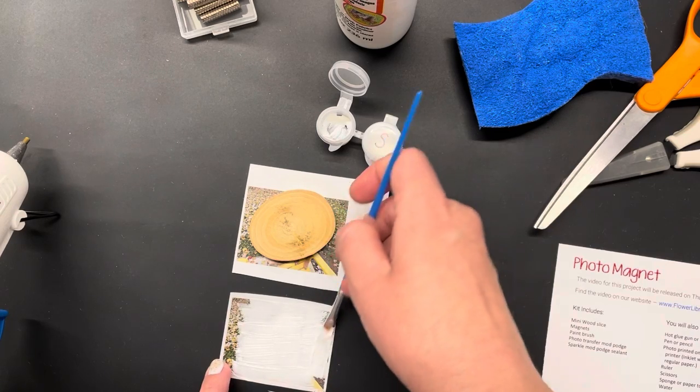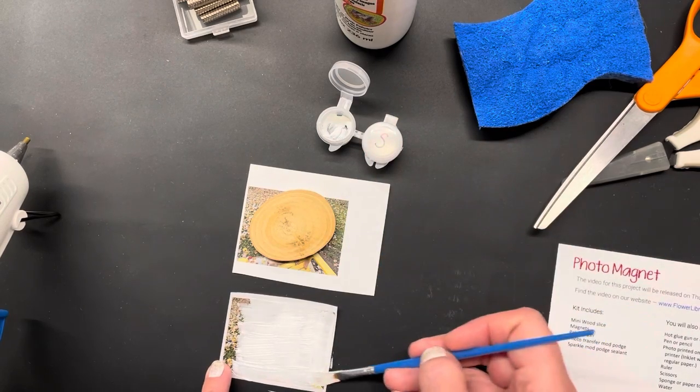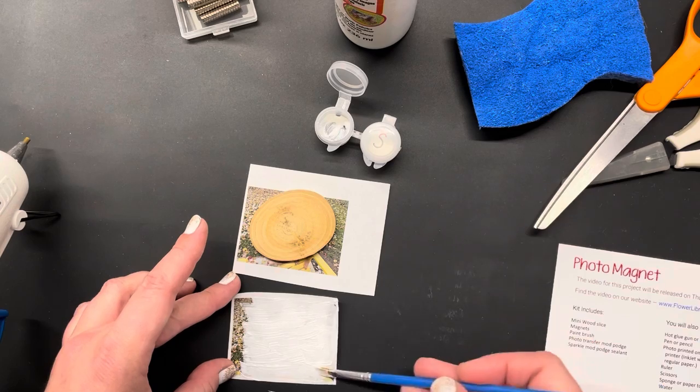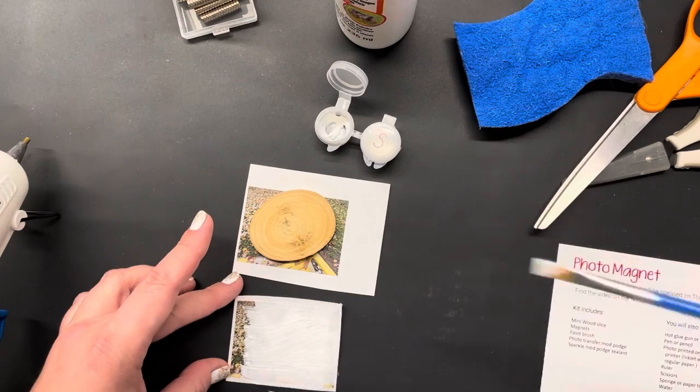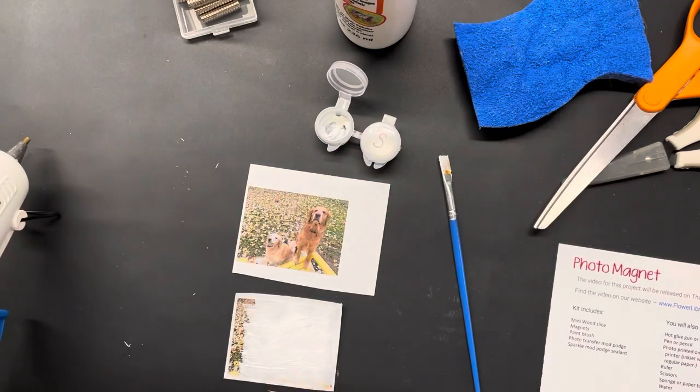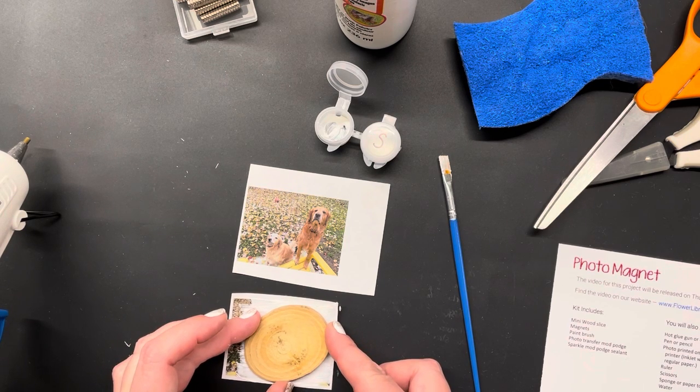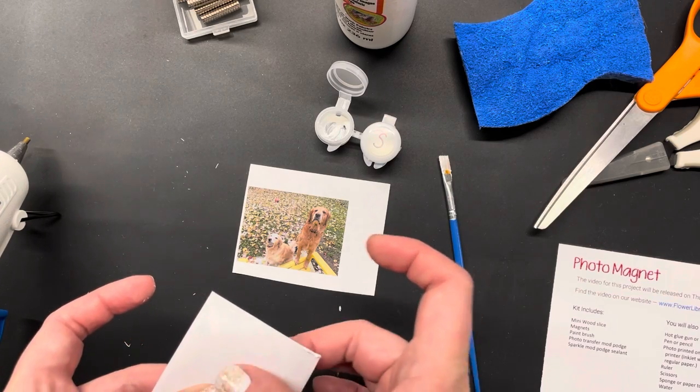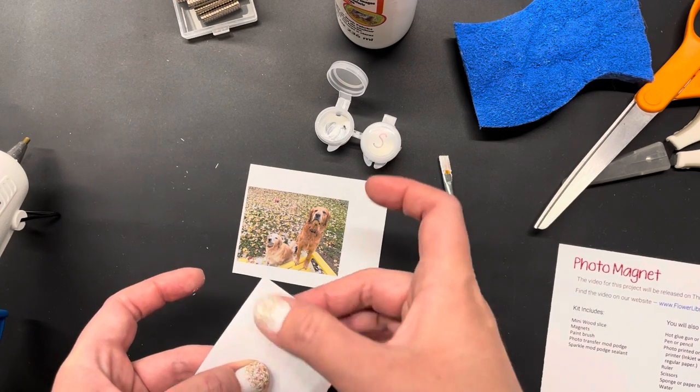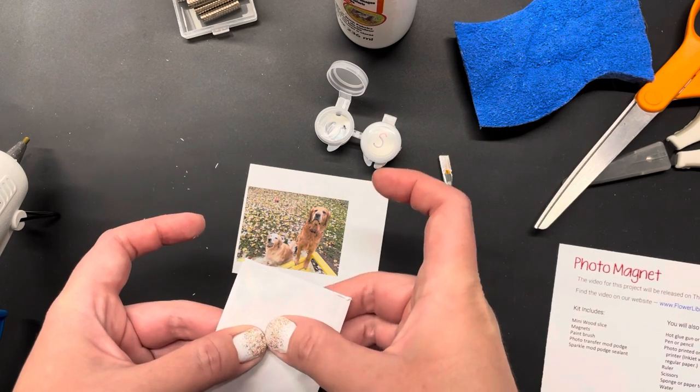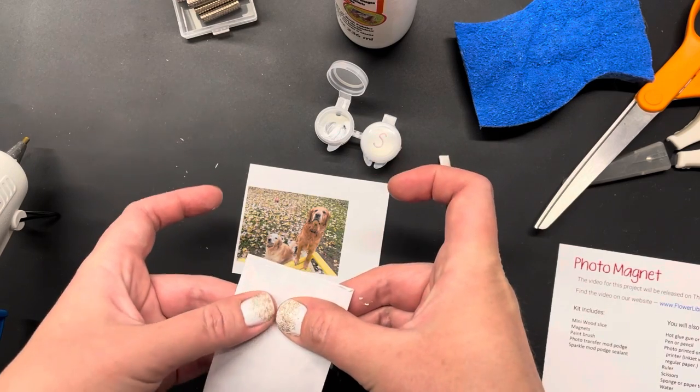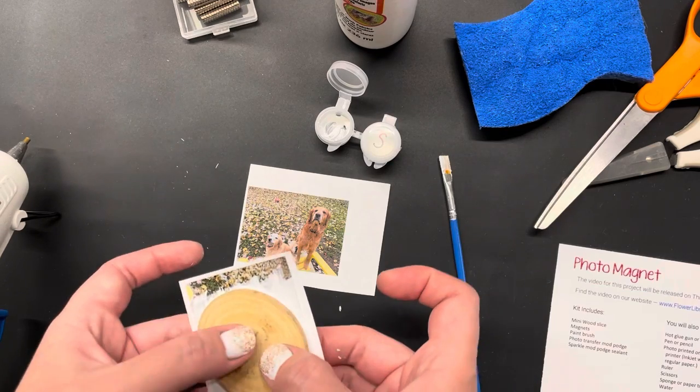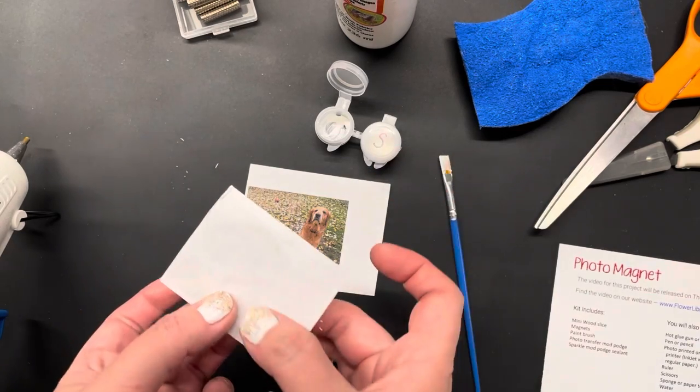You can see that little bit of mod podge is enough to cover this two-inch-plus photo. I'm going to go ahead and take my wood slice and position it on my photo. Then I'm going to gently lift it up and turn it over and just give it a press down with my thumb. You could use a credit card or a plastic squeegee, but I'm just doing a quick press down to make sure that my photo is adhered to my wood slice and that there's no major air bubbles or ripples. You want a nice smooth surface. I am going to go ahead and leave this on my wood slice overnight before I go to step two.